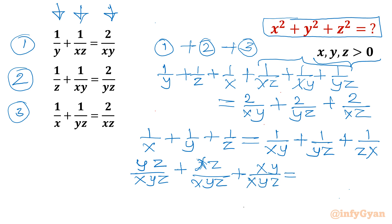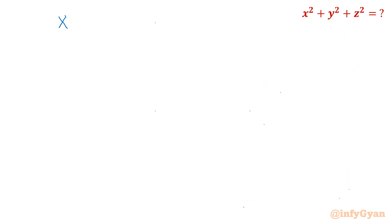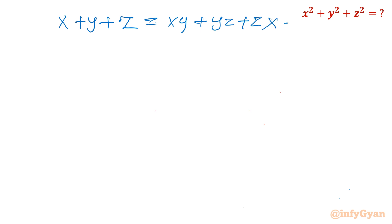Now the denominator is the same (xyz) on both sides, so we can equate only the numerators. The LHS numerator is xy + yz + zx and the RHS numerator is x + y + z. After cancelling xyz, we get x + y + z = xy + yz + zx. Let us call this common value u.